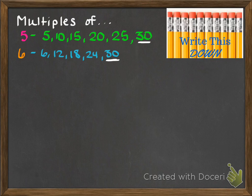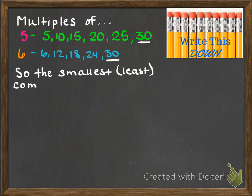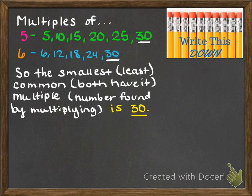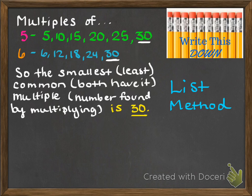Now we're going to find the least — the smallest of all these numbers — common — they both have it — multiple — you had to multiply by 5, 10, 15, 20, 25 to get there. So the least common multiple in this problem is 30. Write: 'The smallest (least), both have it (common), number found by multiplying (multiple) is 30.' This method is called the list method, because all you do is write the actual number itself and then list all of its multiples.